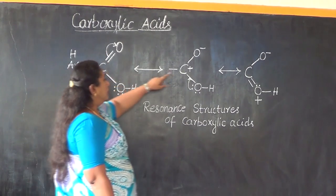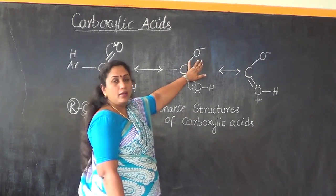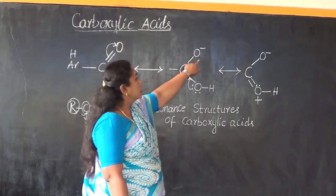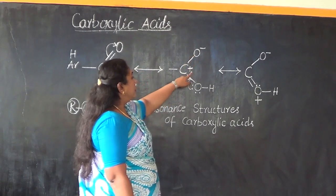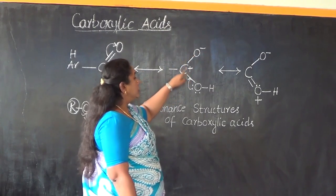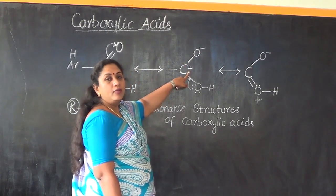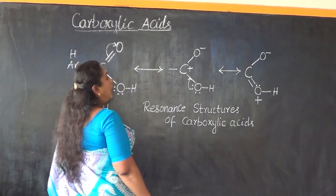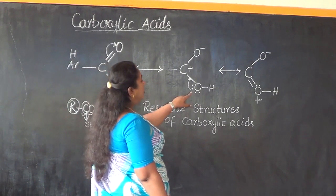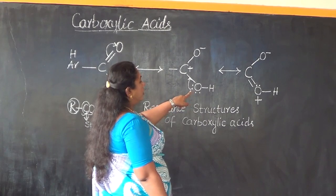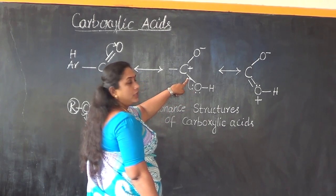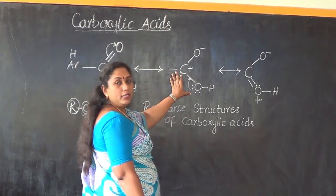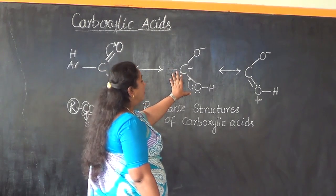Therefore, the structure looks like this. This shifting of the electron cloud makes one oxygen negatively charged, and the carbon, having lost electron density, will now experience a positive charge. As a result, one of the lone pairs from the single-bonded oxygen shifts towards the carbon, so that carbon and oxygen are now linked by a double covalent bond.